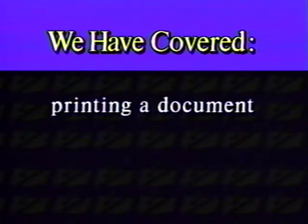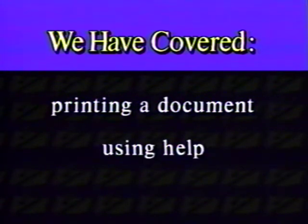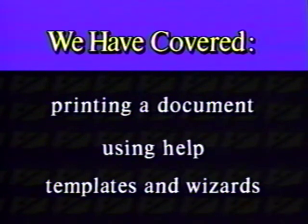In this chapter, we learned three ways to print a document. Then we saw how to get help on a topic. We also learned about templates and wizards. This is simply an overview of templates and wizards in Word for Windows. For more information on using and creating templates, refer to the tutorial, Learning Word for Windows 6.0 Advanced. We'll also learn to make outlines, merge files, and manage documents in the advanced video. That concludes this video tutorial.